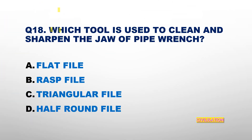Question number 18: Which tool is used to clean and sharpen the jaw of a pipe wrench? Options: Flat File, Rasp File, Triangular File, or Half Round File? The answer is Triangular File.